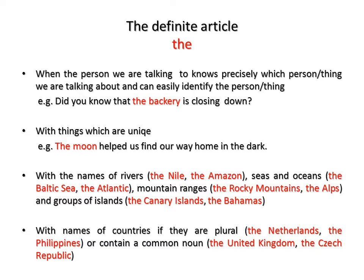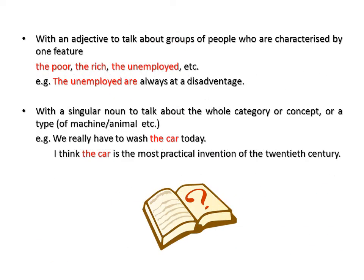The definite article is used with the names of rivers, seas and oceans, mountain ranges and groups of islands. It is also used with names of countries if they are plural or contain a common noun. We use 'the' with an adjective to talk about groups of people who are characterized by one feature — the poor, the rich, the unemployed, etc. For example: 'The unemployed are always at a disadvantage.' As you can see from the example, the verb is always plural.